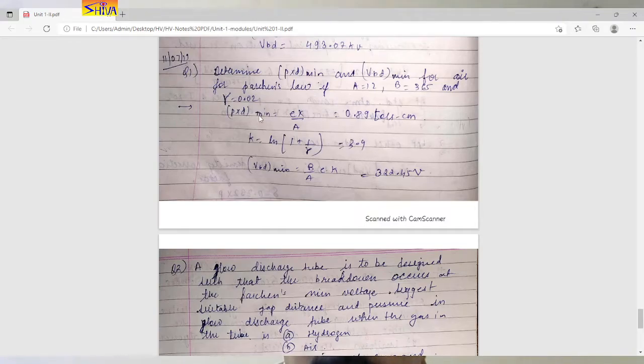Next is p into d minimum equation: e into k upon a. Value of e is 2.81. You can see the value of e from your calculator. So e into k upon a, substitute the value of exponential e, k you have computed 3.9, value of a is given 12. So answer is 0.89 torr centimeter.